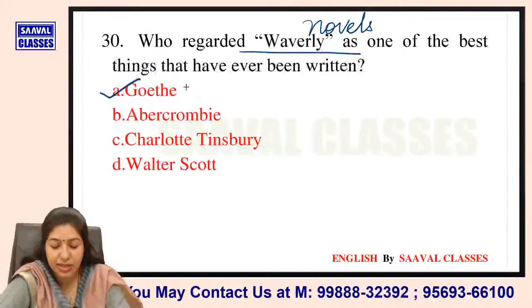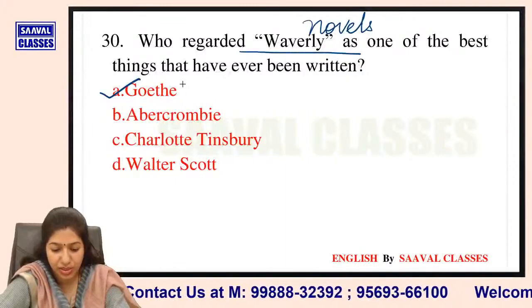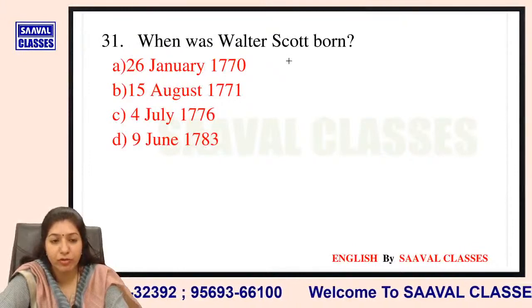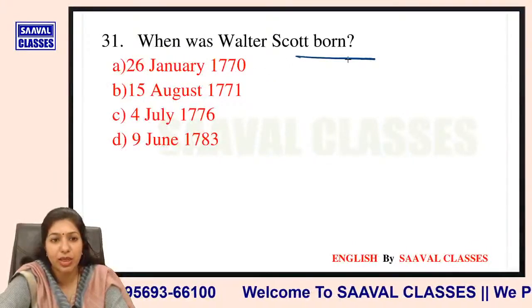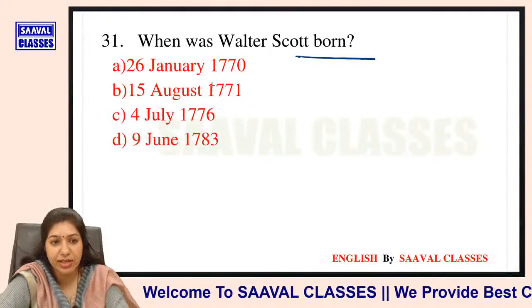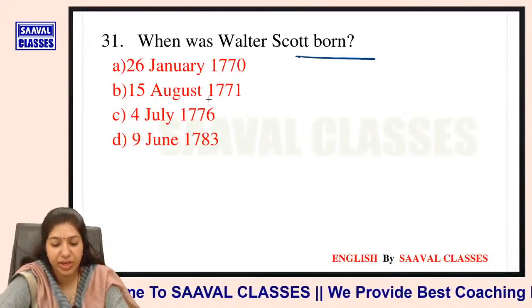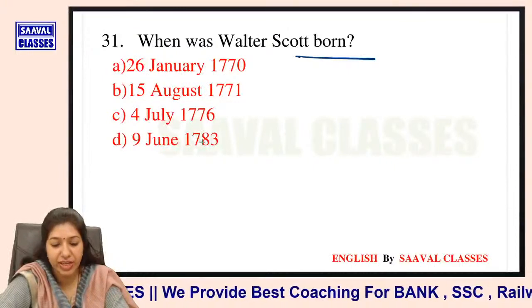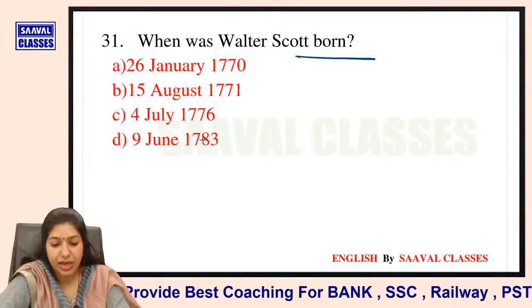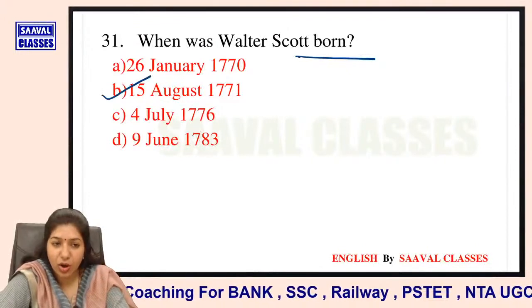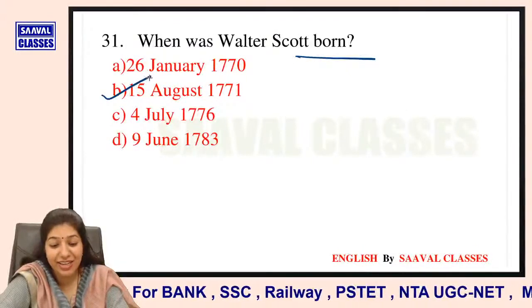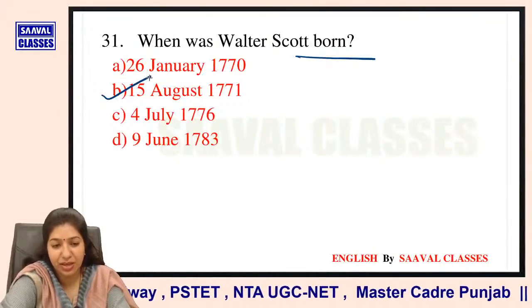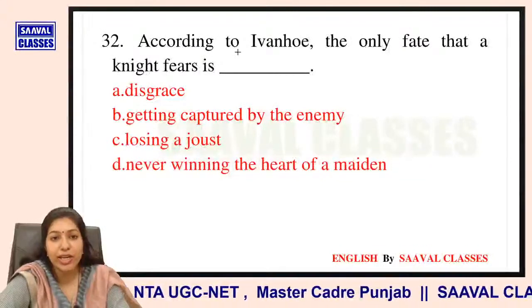Question number 31: When was Walter Scott born? Options are 26th January 1770, 15th August 1771, 4th July 1776, ya 9th June 1783? The answer is 15th August — easy to remember as our independence day.